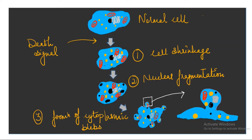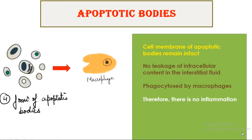We know that after receiving a death signal, a cell will undergo morphological changes and finally form apoptotic bodies. The details of the morphological changes and the diagram are in the previous video of apoptosis. If you haven't watched them yet, the link is in the i-button and the description box. Finally, there is a formation of apoptotic bodies and we have to look at certain points regarding these bodies.